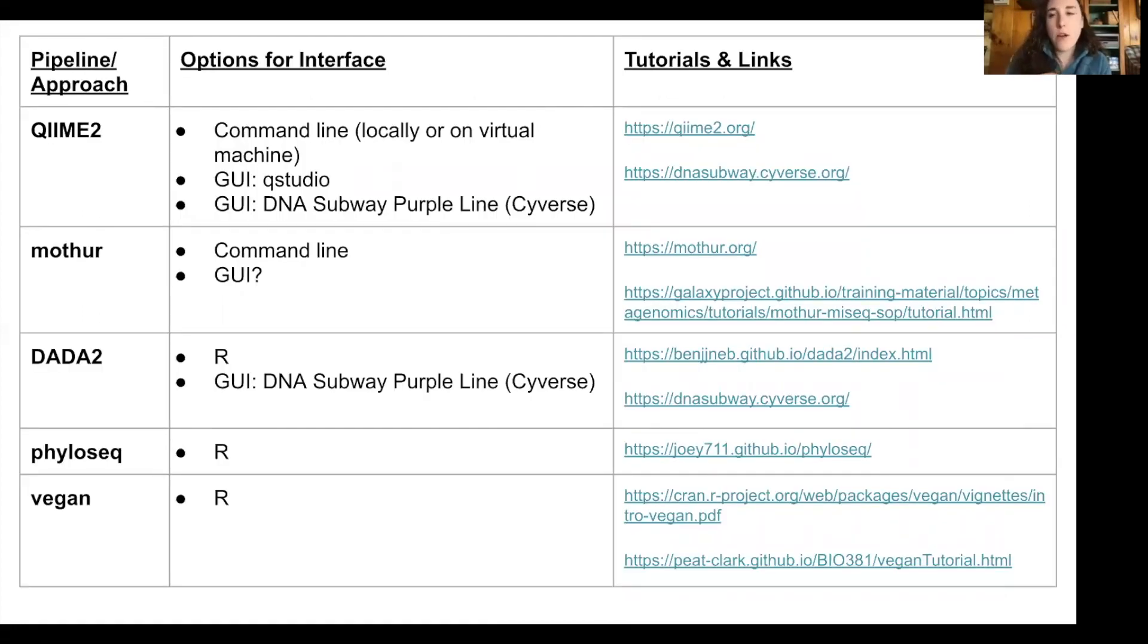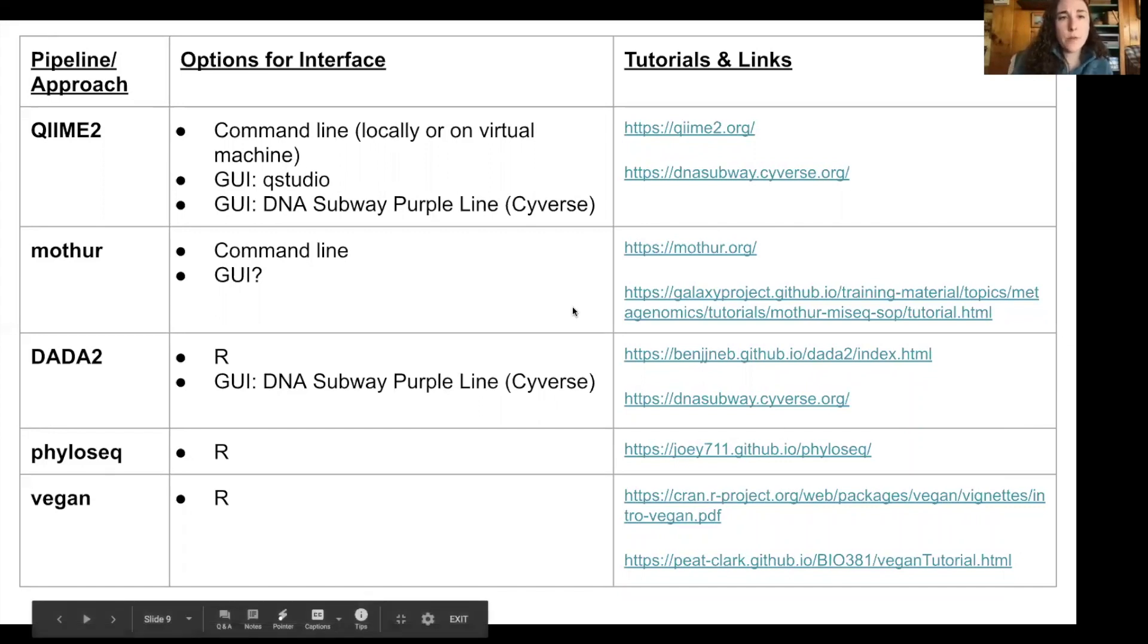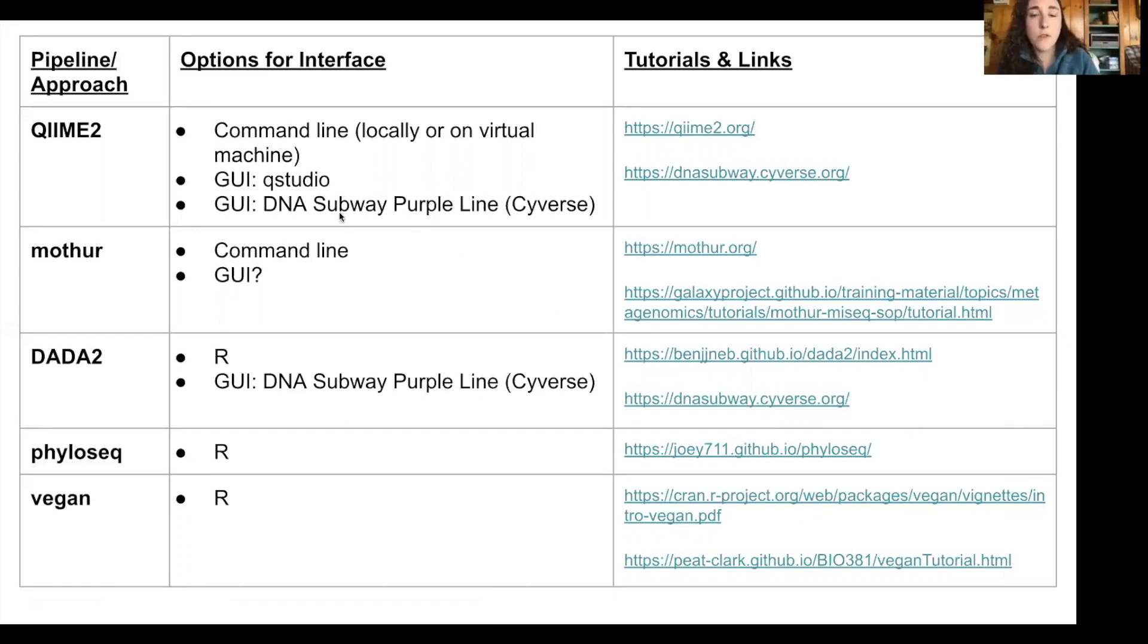So I also wanted to give sort of a rundown of how you can implement these different approaches. So for QIIME 2 and mothur, these are mostly and usually implemented in the command line, whether it's natively on your own computer or in a virtual computer. There are graphical user interface or GUI options for QIIME 2. One is available through the QIIME 2 group. It's called Q2Studio. And then there's another one that's available through the Cyverse network. It's called DNA Subway Purple Line. So I put links for all of these on the right here, and I'll make these available on the lesson page as well. So the second approach here, mothur, is usually run through the command line. And I think there was some effort to make a GUI available, but I think that's still under development. So I put a couple links for tutorials here and the initial documentation for mothur here.